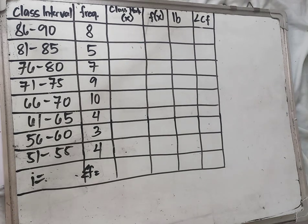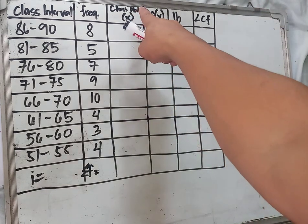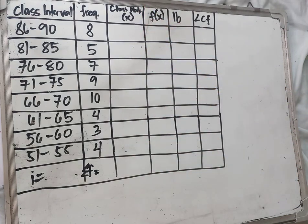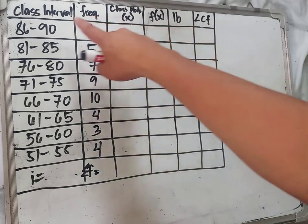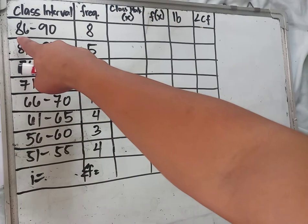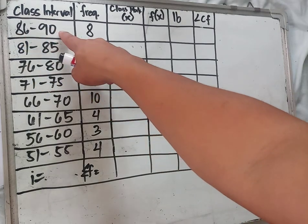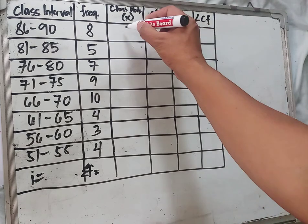Before we find the value of the mean, we need to complete the frequency distribution table. Based on the formula, we need frequency f and the class mark x, which is the midpoint of each class. To find x, take the class interval — for example, 86 plus 90 divided by 2, which equals 88.